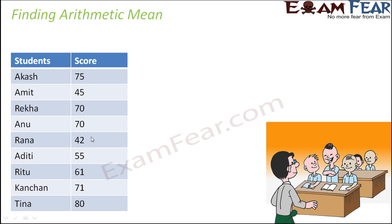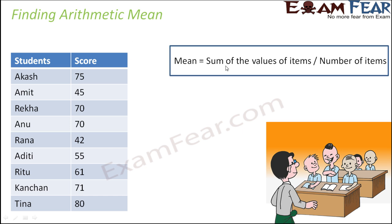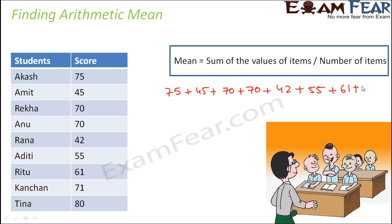These are the scores of different students in the class. We already saw that arithmetic mean equals the sum of the values of items divided by the number of items. So the sum of values would be: 75 + 45 + 70 + 70 + 42 + 55 + 61 + 71 + 80, divided by the number of students.